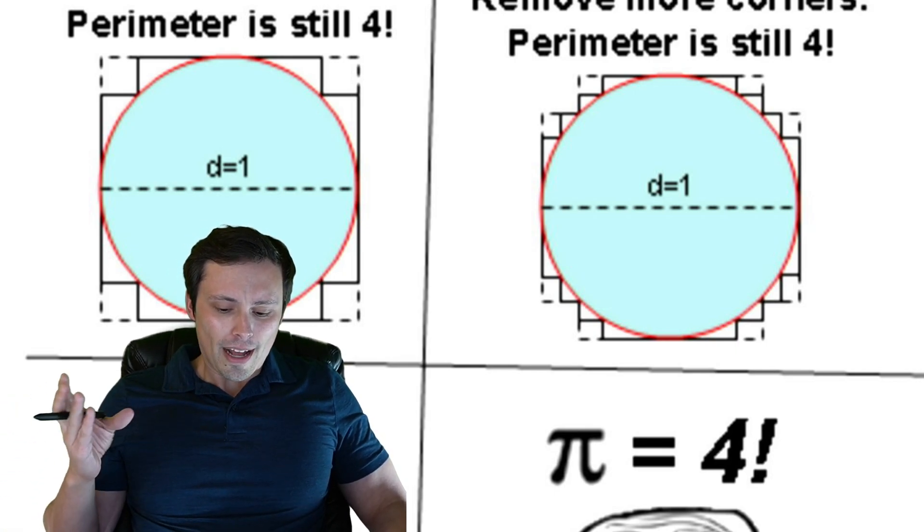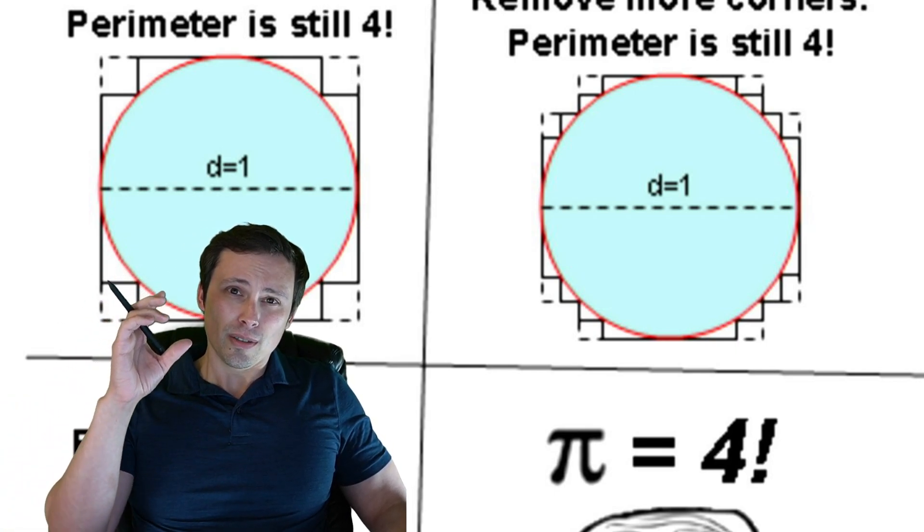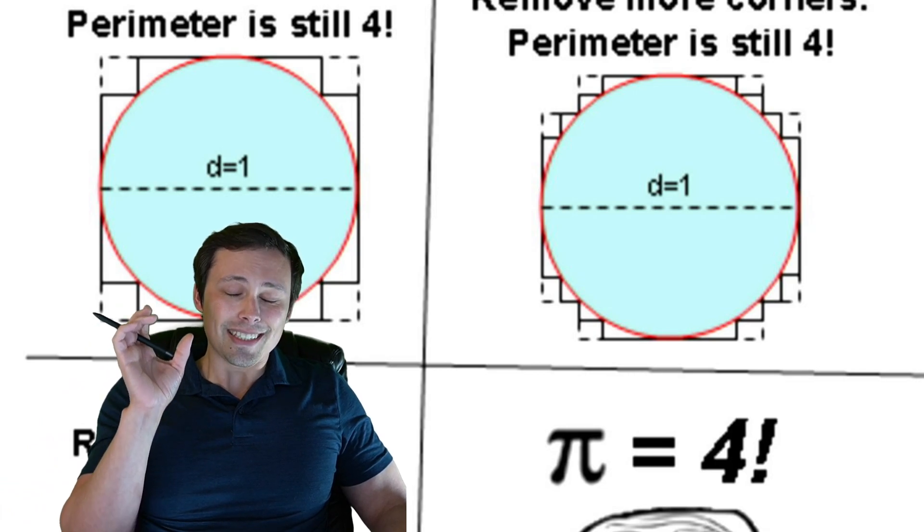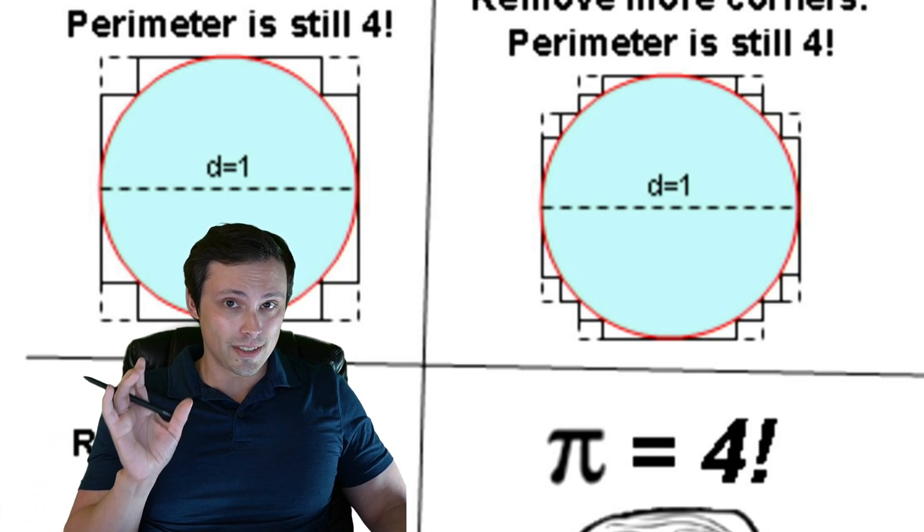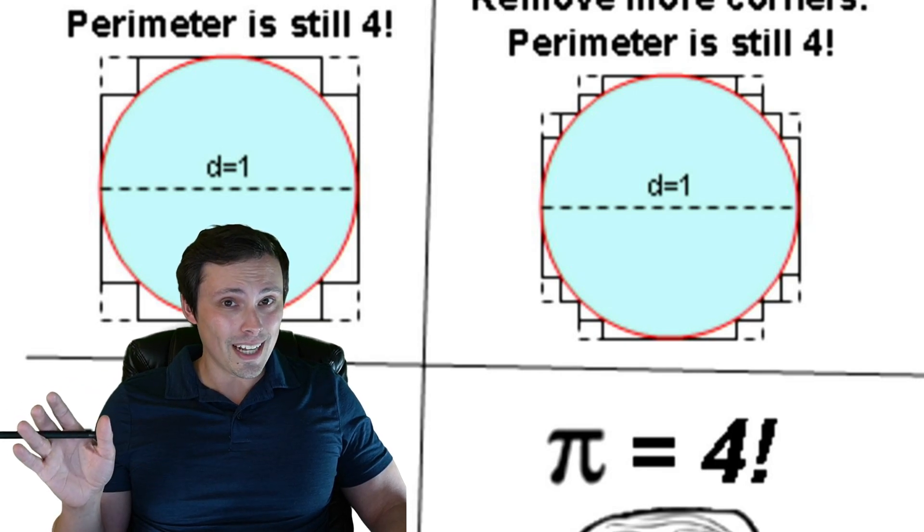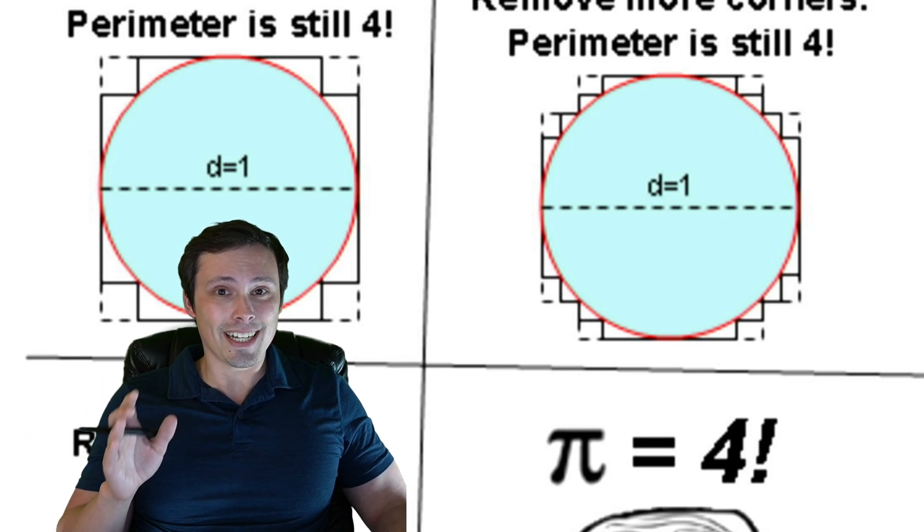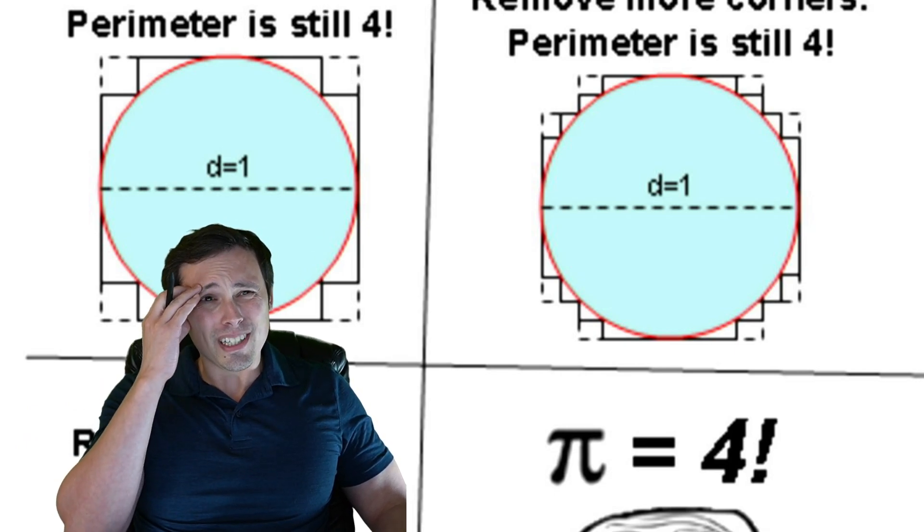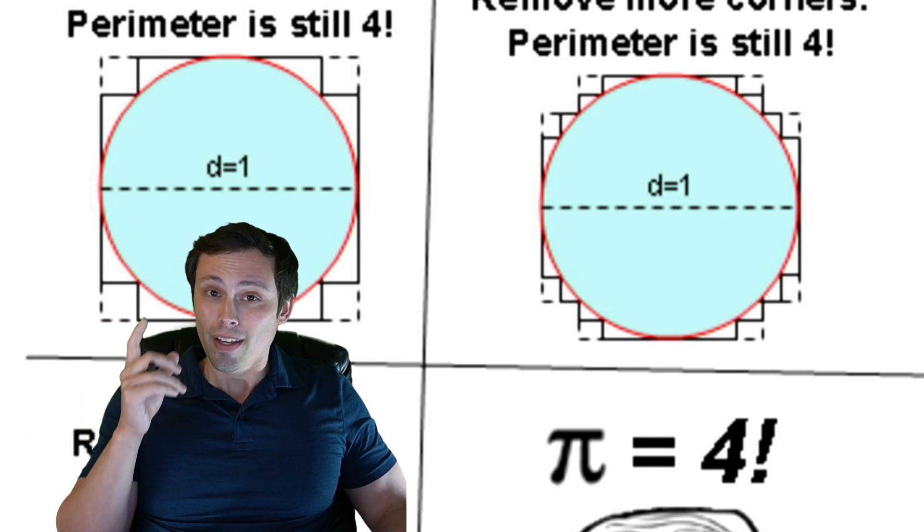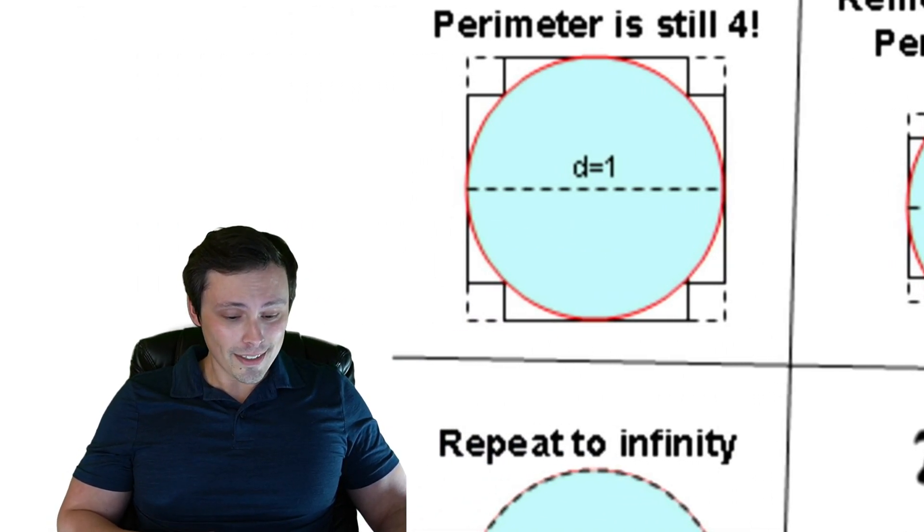As this gets closer and closer into the circle, its area is definitely approaching the area of the circle, but its perimeter is not. Its perimeter is remaining four; its perimeter is not changing. But you're like, but it looks more and more like the circle. Okay, it does look more and more like a circle, but here's the thing.